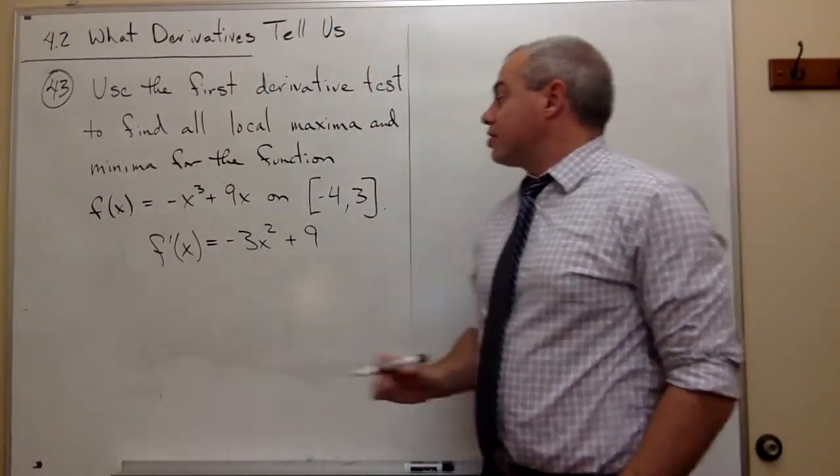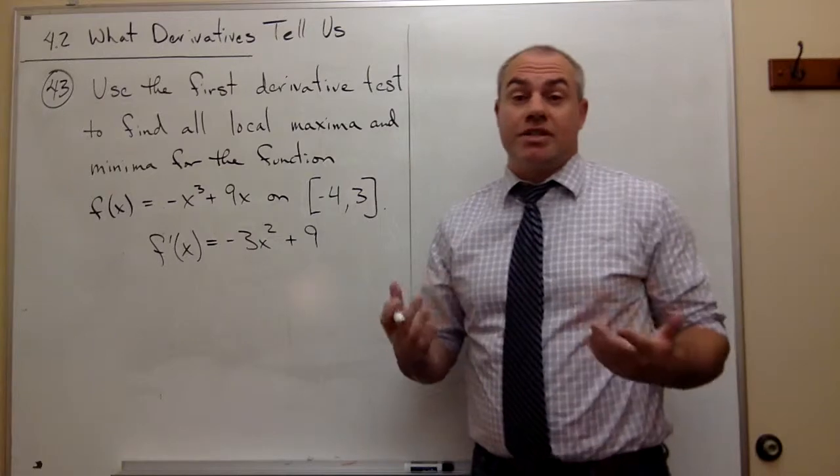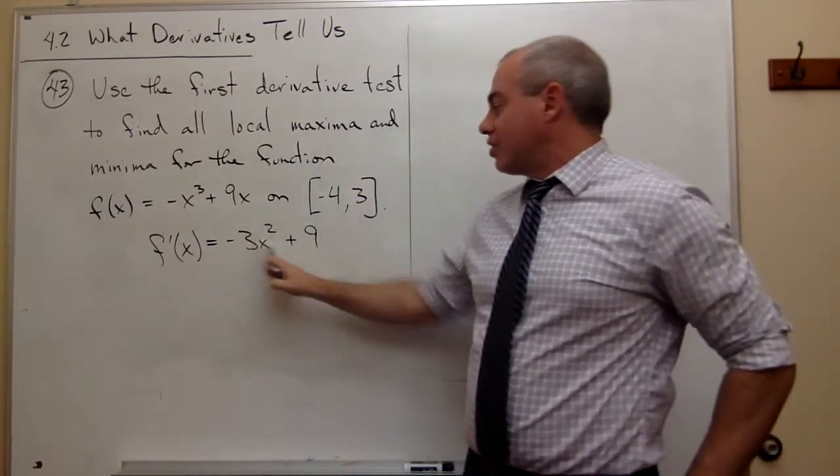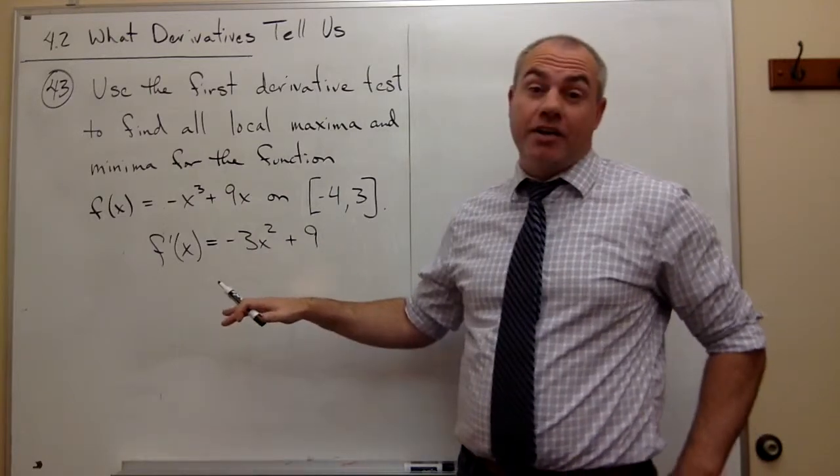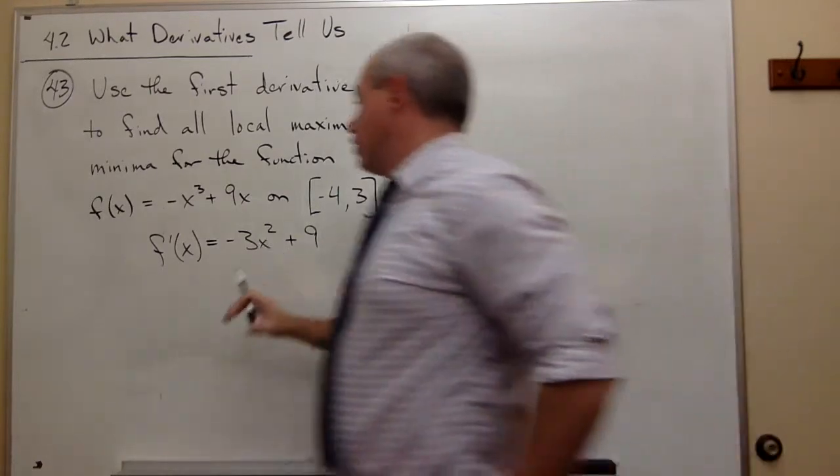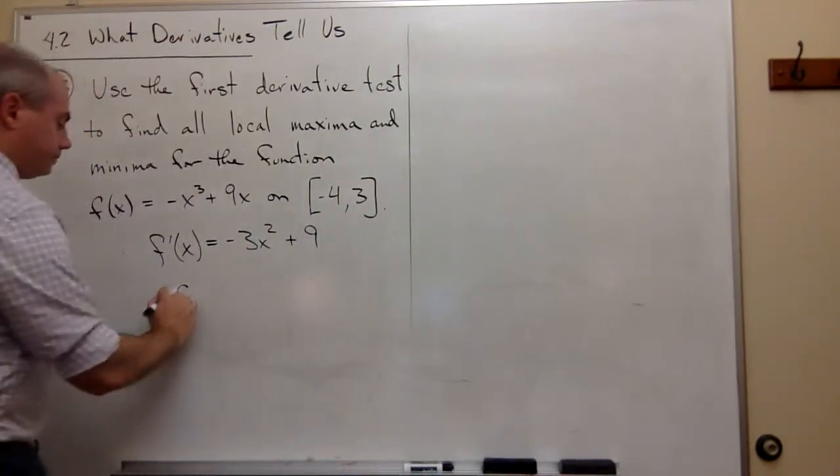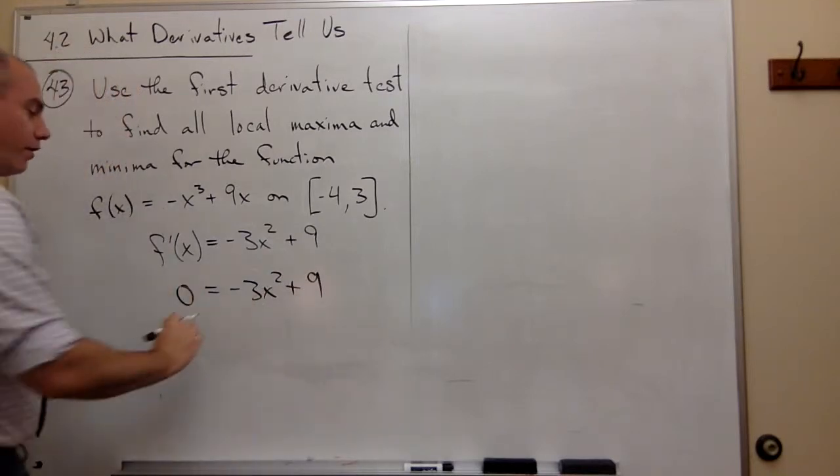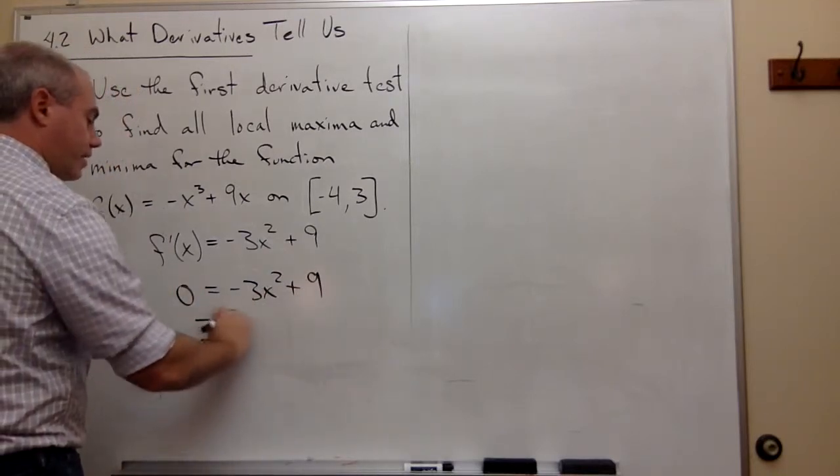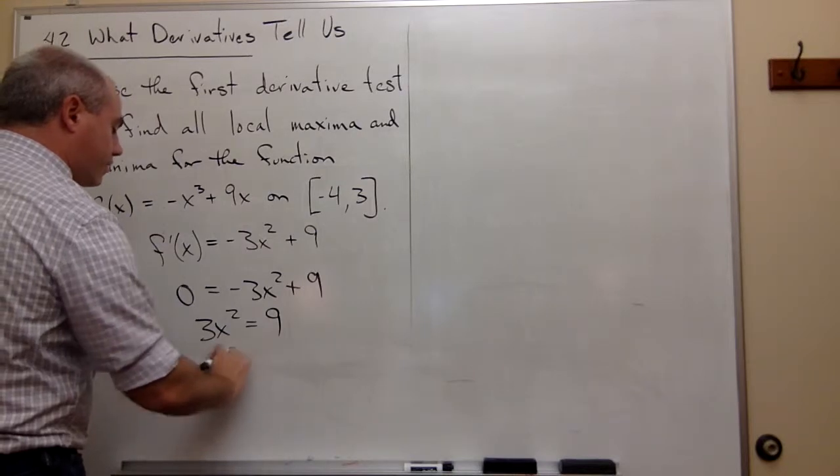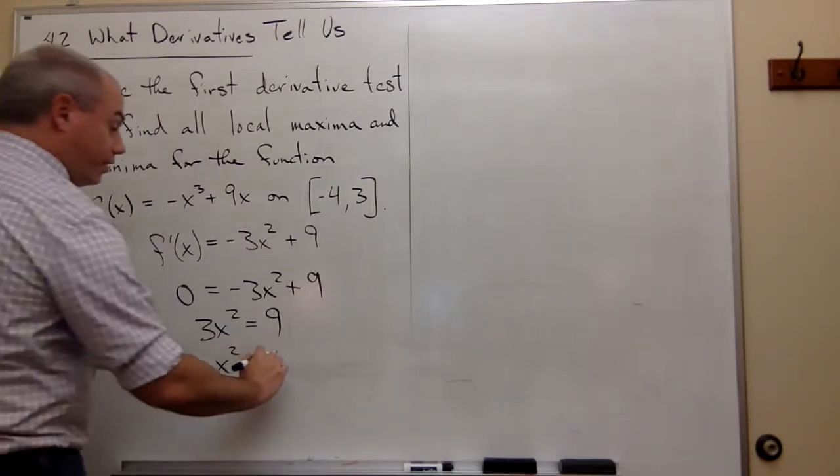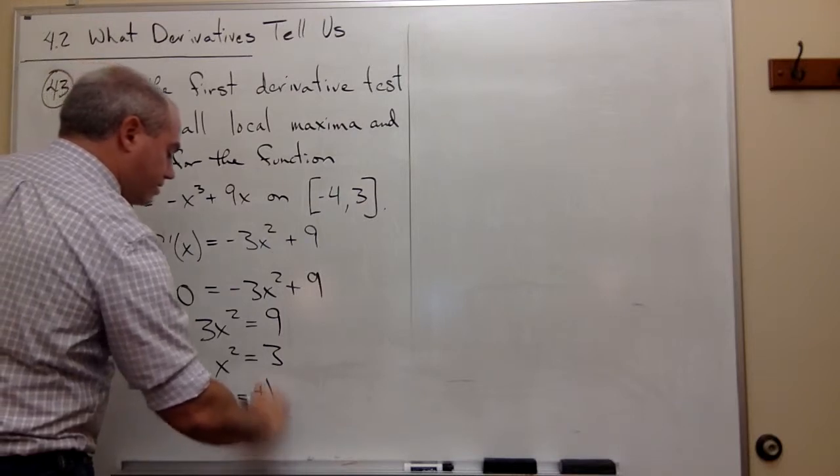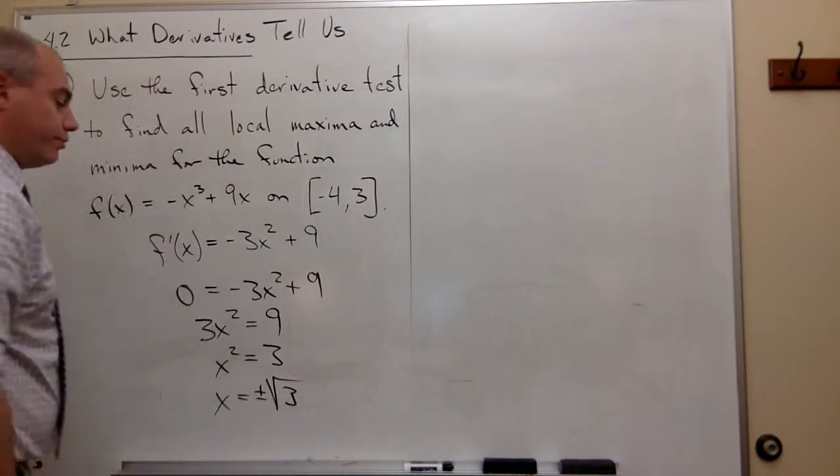I want to set that equal to 0 and solve for x. I would also figure out where it's undefined, but there is no denominator here, so I don't need to worry about that. So let's set it equal to 0 and solve for x. I get 3x² = 9, x² = 3, and x = ±√3.